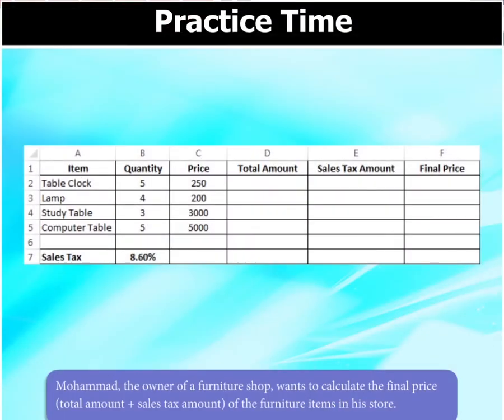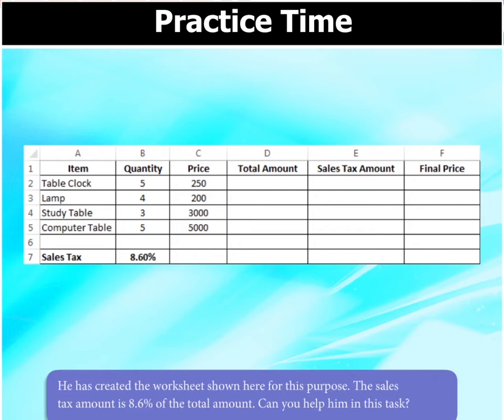Mohammed, the owner of a furniture shop, wants to calculate the final price — total amount plus sales tax amount — of the furniture items in his store. He has created the worksheet shown here for this purpose. The sales tax amount is 8.6% of the total amount. Can you help him in this task?